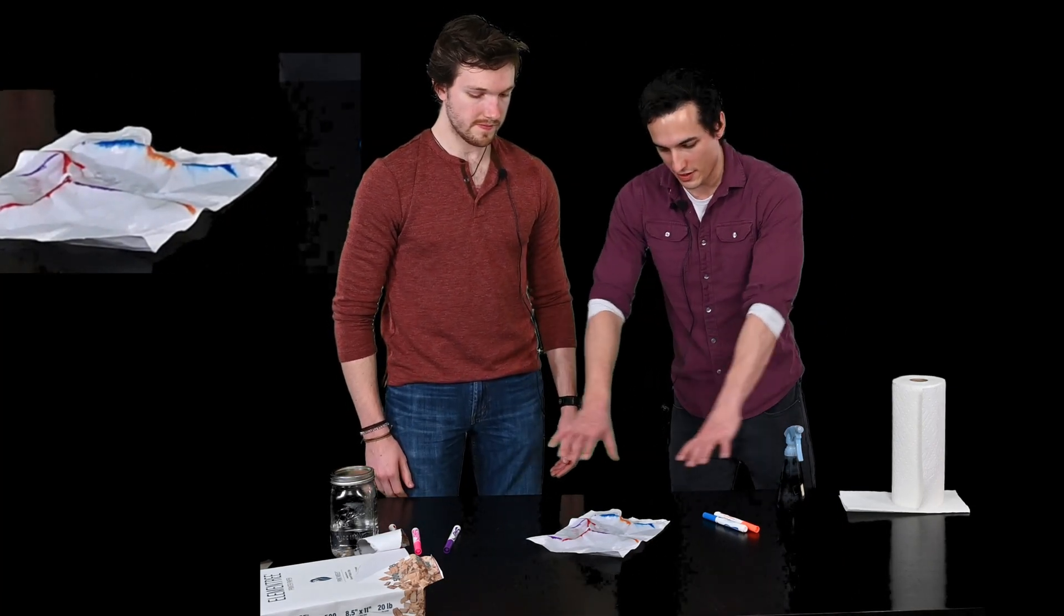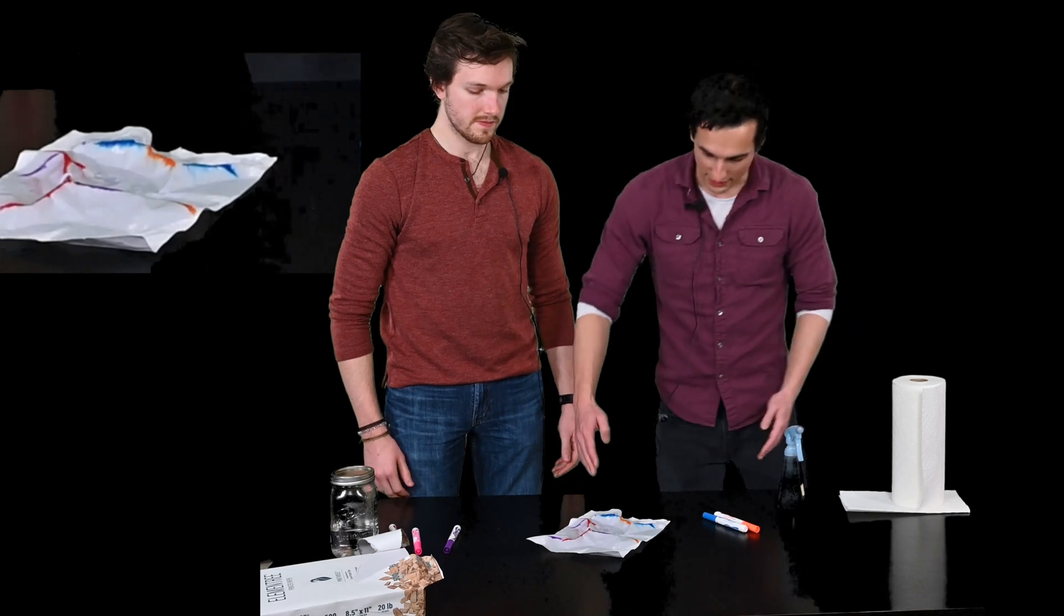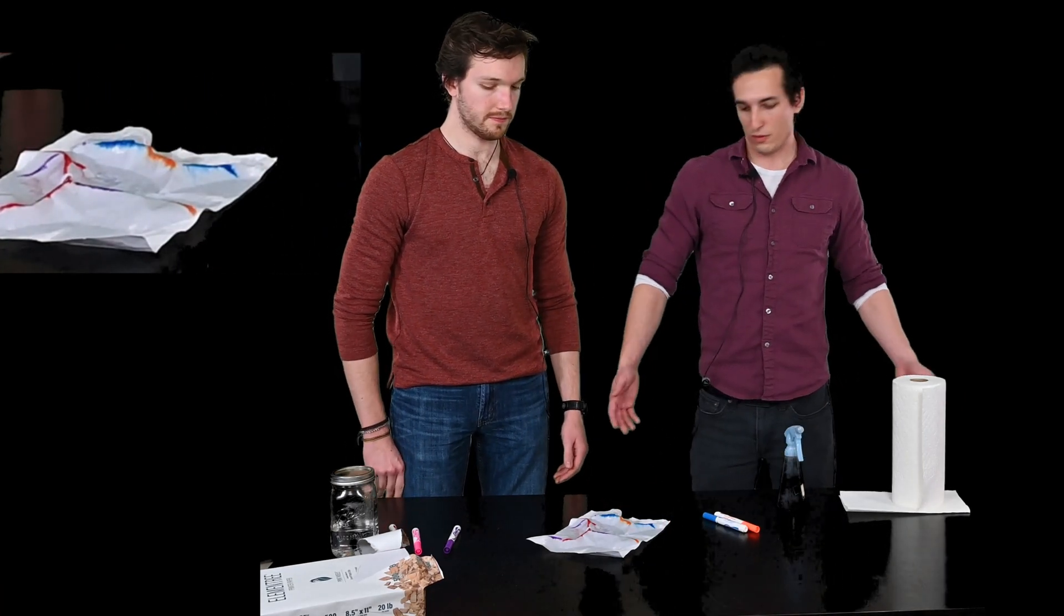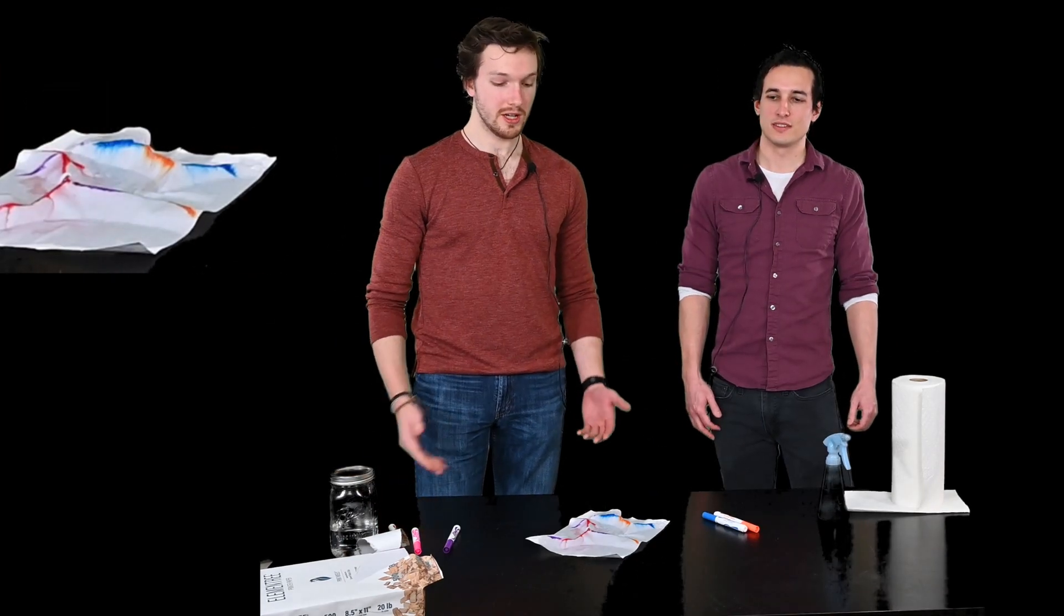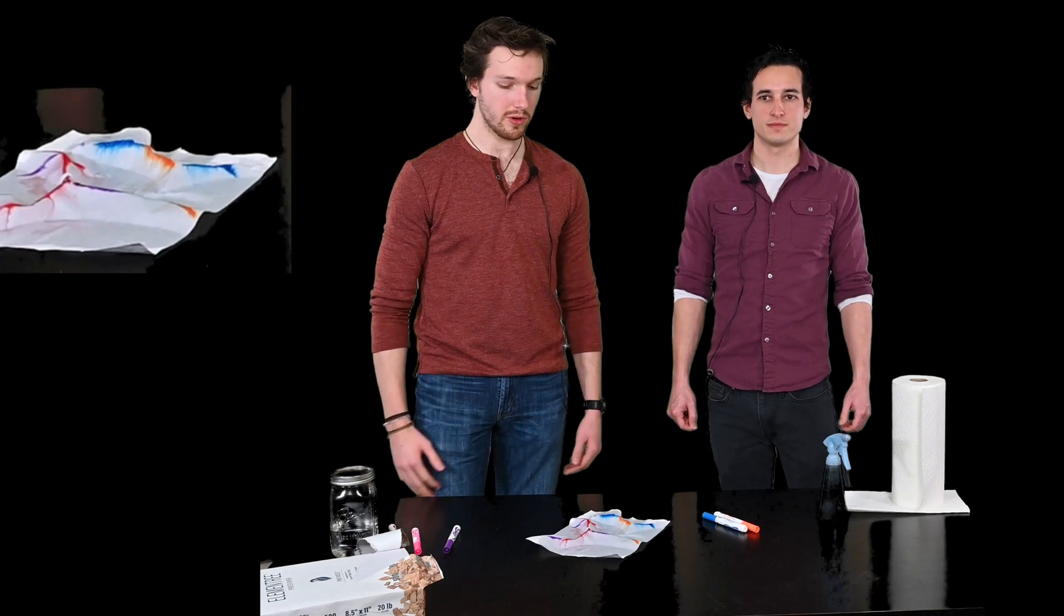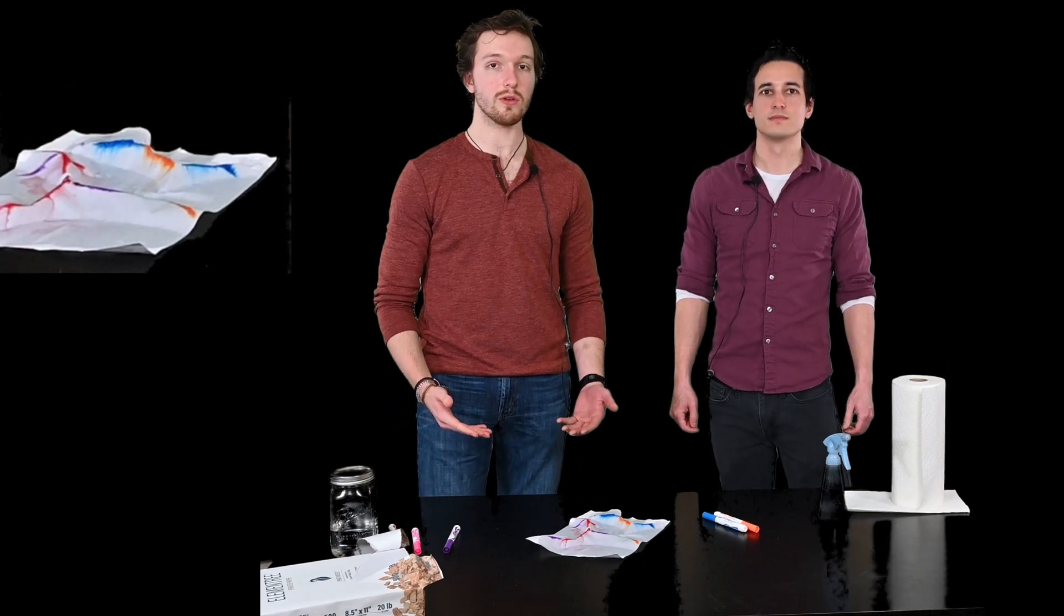So imagine this paper extending further out. It's likely that this would be a river that flows all the way out until it reaches a lake or an ocean. So that is our simulation of a watershed, and watersheds are important because they can tell us where the water is coming from.